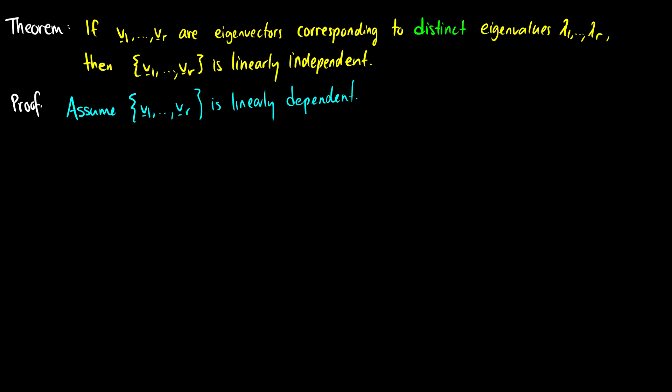For linearly dependent sets, we know that a set is linearly independent up to some point where a vector vp is a combination of all previous vectors. So we say v1 through vp are linearly independent, written as c1*v1 + c2*v2 + ... + cp*vp, and those vectors are linearly independent. But the next vector, vp+1, is dependent — it is a linear combination of all the previous vectors: vp+1 = c1*v1 + c2*v2 + ... + cp*vp. This is the first vector that is dependent.